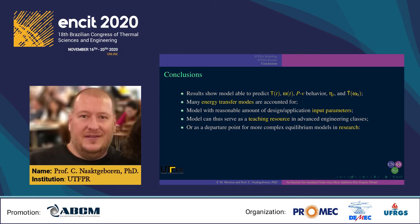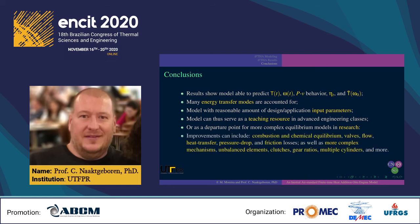Conclusions: results show that the model is able to predict instantaneous torque and angular speed, the coupled cycle PV behavior, thermal efficiency, and cycle average torque. Many energy transfer modes are accounted for, and the model has a reasonable amount of design and application input parameters. The model can serve as a teaching resource in advanced engineering classes or as a departure point for more complex equilibrium models in research. Moreover, model improvements can include combustion and chemical equilibrium, valves, flow, heat transfer, pressure drop, and friction losses, as well as more complex mechanisms, unbalanced elements, presence of clutches, various gear ratios, and multiple cylinders.